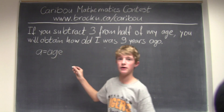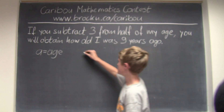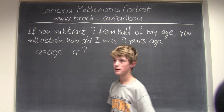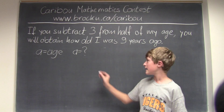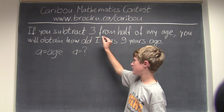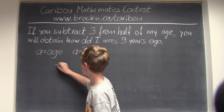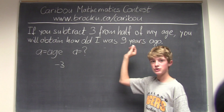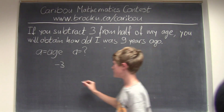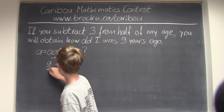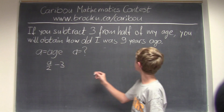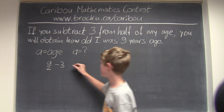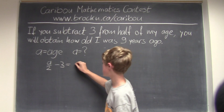We want to figure out what the age is. So it would be A equals — if you subtract 3, we put minus 3, from half of my age, so A divided by 2, that would be the same as my age 9 years ago, which is the age minus 9.